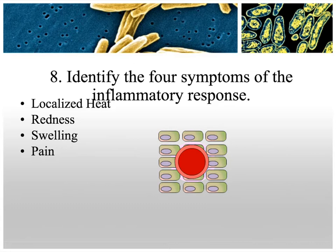The four symptoms of the inflammatory response all relate to vasodilation. Blood carries heat, and a swollen vessel is closer to the skin surface, so you feel localized heat. Blood is red, and as the vessel dilates it gets closer to the surface, causing redness. Plasma leaking out causes swelling, and the increased fluid presses on pain receptors in your skin, causing localized pain.